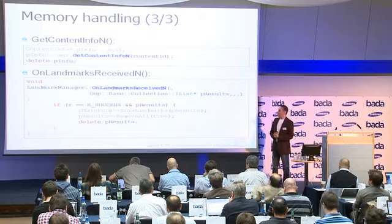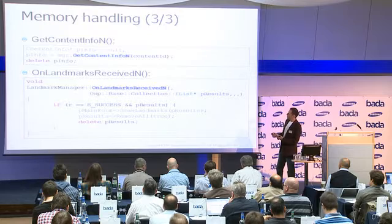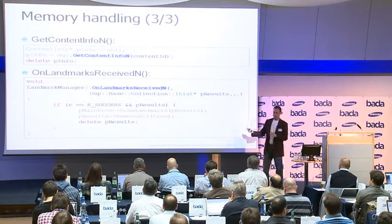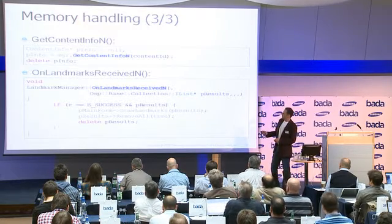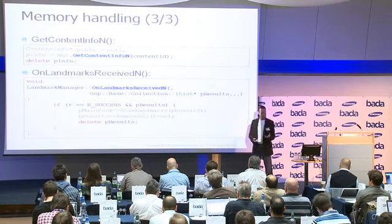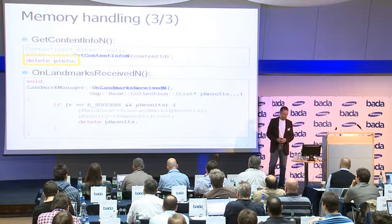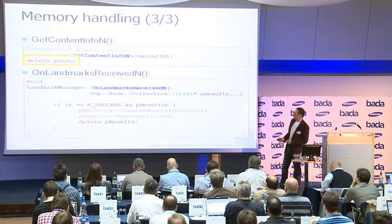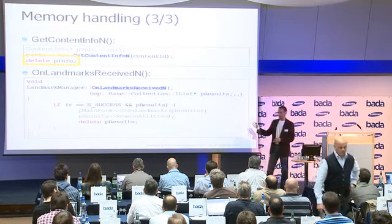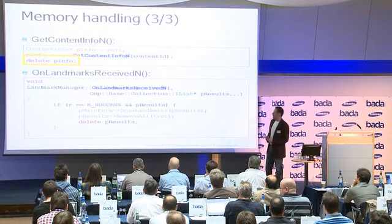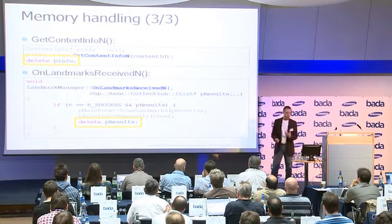To make that more tangible, here is some code. The first example is `get_content_info_n`, a method that connects to a remote server and retrieves information. Because of the trailing N, you as the caller are responsible for deleting the returned object. The same is true for the second example, `on_landmarks_received_n`, which queries a remote server for points of interest or landmarks — again, when you receive the returned object, you are responsible for managing it.